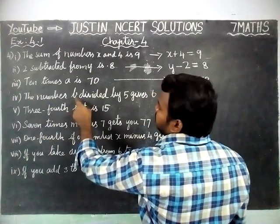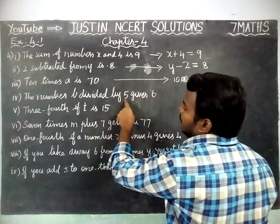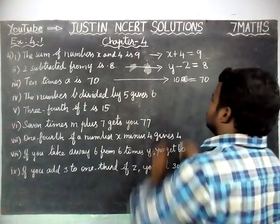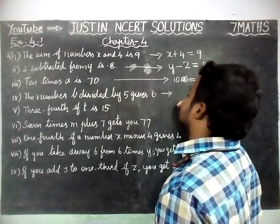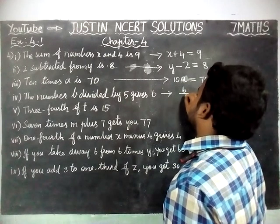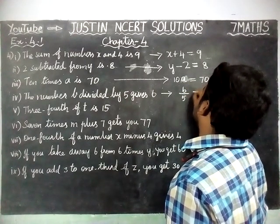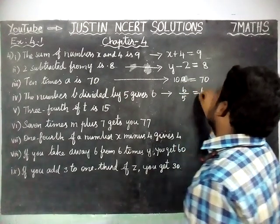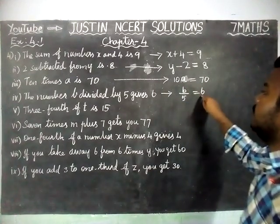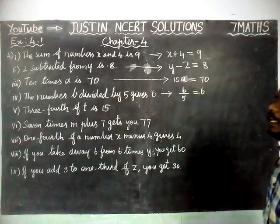Next, the number B divided by 5 gives 6. So this equation is B divided by 5 is equal to 6. That is, B ÷ 5 = 6.